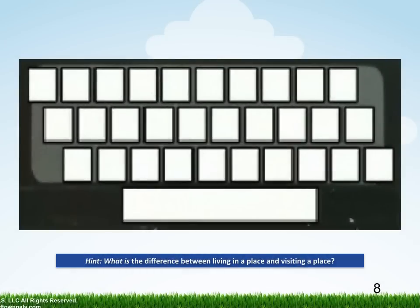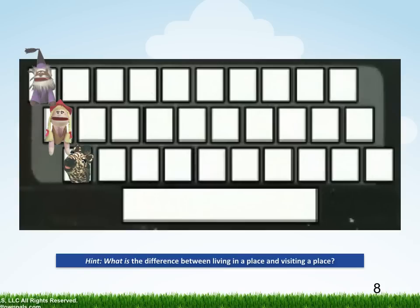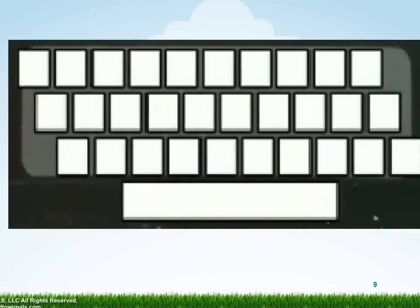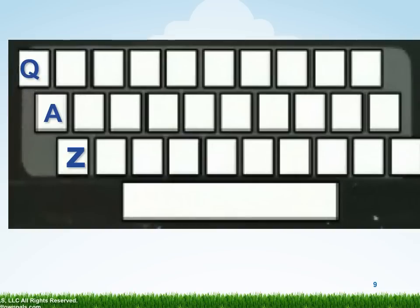Remember the puppets from the town? They like to visit the keyboard. Amy likes to visit the first key on Home Key Street. Zebra likes to visit the first key downtown. And Q-Word likes to visit the first key uptown. But it is the letters that live on the keys. A lives on the first key on Home Key Street. Z lives on the first key downtown. And Q lives on the first key uptown.